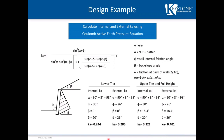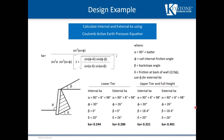To start, we need to determine the internal and external earth pressure coefficients Ka. We are using Coulomb, consistent with the NCMA third edition — we'll do it for the lower tier and then for the upper tier. Next, we'll estimate the grid length of the lowest tier. We'll try 60% of the total tiered height, where L equals 0.6 times 9 feet, giving 5.4, rounded up to 6 feet. Based on the back slope and soil parameters, the final grid length will likely be longer than this.